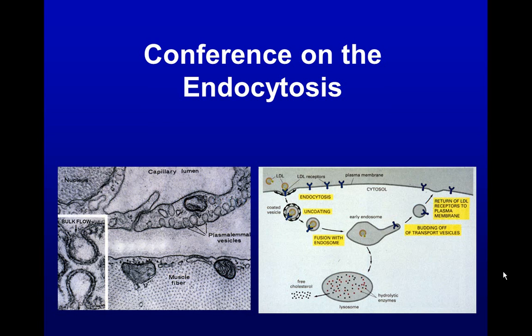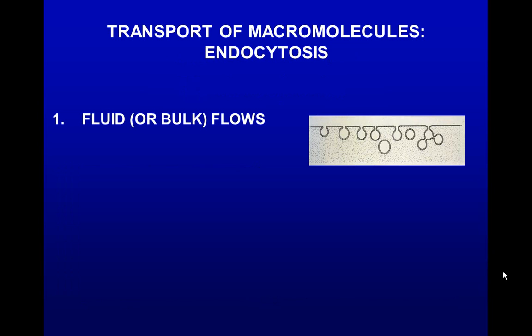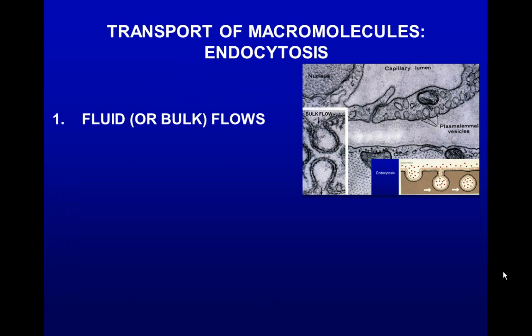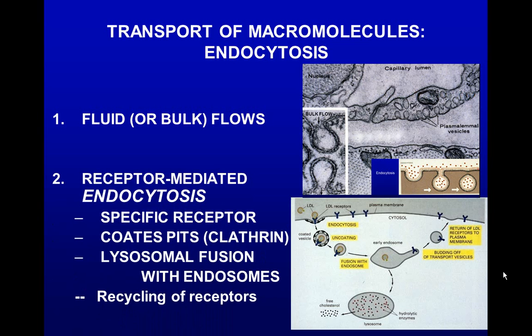This is a conference on endocytosis. Endocytosis could be bulk flow, where whatever is in the lumen gets pinched off from the surface. We see that in blood vessels where serum components are endocytosed from the lumen and transported through the thin cell membrane out into the extracellular fluid. In contrast, receptor-mediated endocytosis requires more components: specific receptors, coated pits, and clathrin.